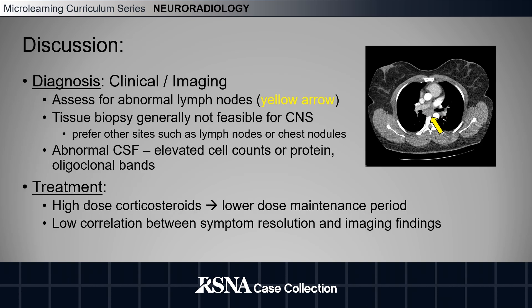Making the diagnosis of intracranial sarcoidosis involves clinical signs and imaging findings, and often relies on identifying sarcoidosis in other organ systems — as we can see here, abnormal subclinical lymph nodes on chest imaging. Tissue biopsy is generally not feasible for central nervous system involvement, and other sites are preferred such as lymph nodes or chest nodules.